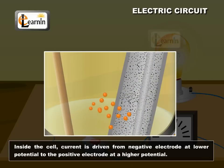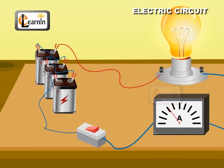Inside the cell, current is driven from the negative electrode at a lower potential to the positive electrode at a higher potential, so that the circuit is completed. The key helps either in closing or opening the circuit.